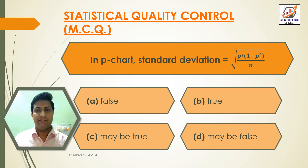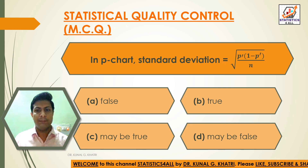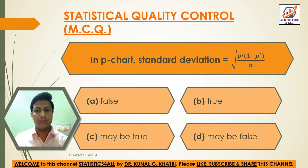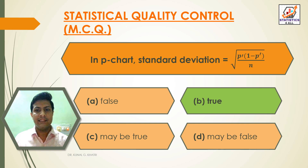Question 12: In P chart, standard deviation is equal to √(P-dash × (1 − P-dash) / n). Option A: False, Option B: True, Option C: Maybe true, Option D: Maybe false. Answer: Option B — True. Standard deviation = √(P-dash × (1 − P-dash) / n).